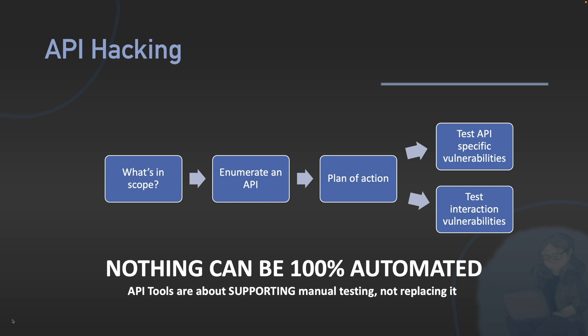After we've enumerated an API, we can start to make decisions — our plan of action. Often this leads to API-specific vulnerabilities, things like IDORs. Sometimes that might be interaction vulnerabilities — cross-site scripting, where you're essentially bypassing WAF filters by just going to the API instead. But that requires a bit more tuning — it's very much using the API as an entry point rather than testing the API itself. When we think about API-specific vulnerabilities, I'm talking about things like the API Top 10 — IDORs, information disclosure, your traditional API security vulnerabilities.